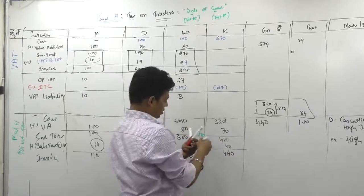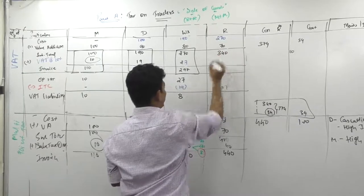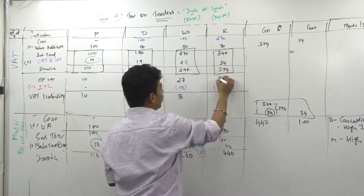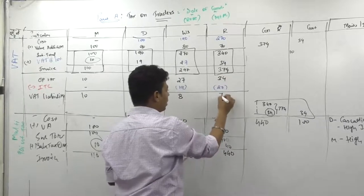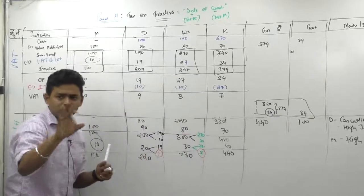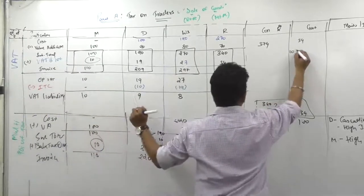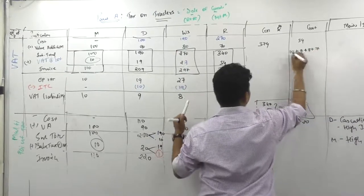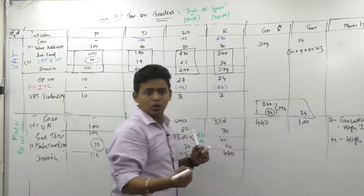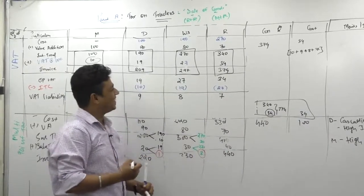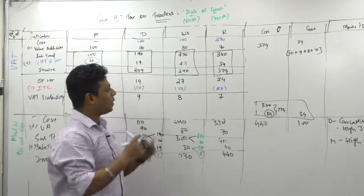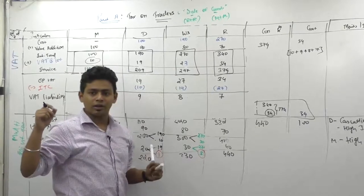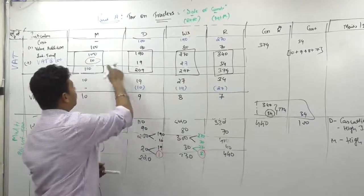Value addition 70. 340. But he cannot sell at 340. He has to charge 34, so 374. His output liability 34. But he will pay 7. So look at the government. Government in cash earned how much? 10 rupees from manufacturer. 9 rupees from dealer. 8 rupees from wholesaler. And 7 rupees from retailer. If you add all this? 34. Eureka. Abra-cadabra. Value addition. Cascading effect is removed. Go and check.